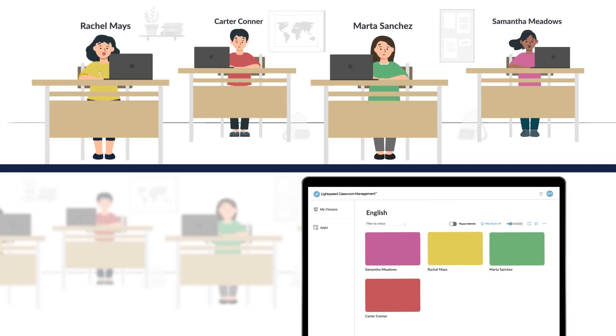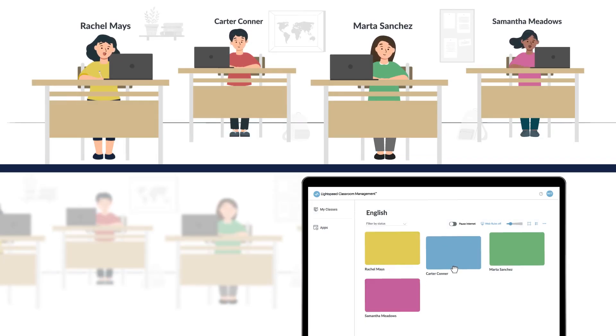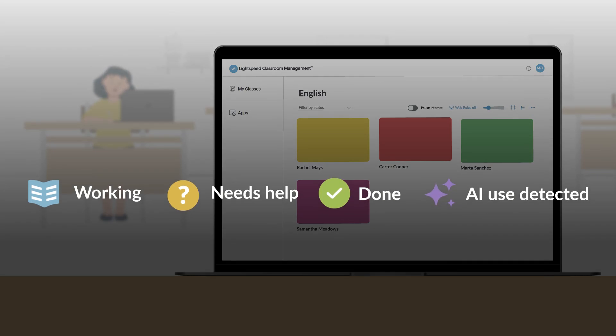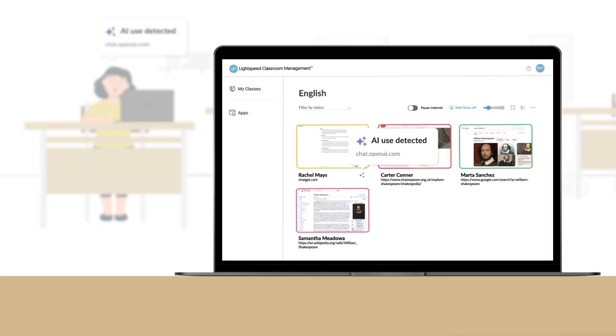From the main dashboard, I can see my students' screens and arrange them according to my seating chart. Alerts notify me when my students are off-task and when my students access AI sites.